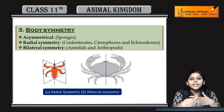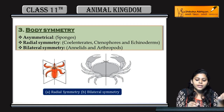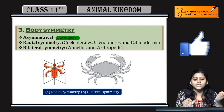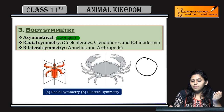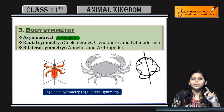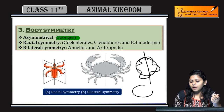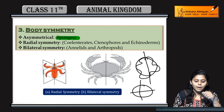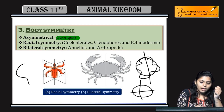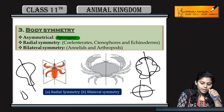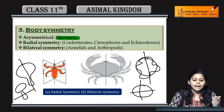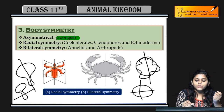Next hum dekhenge body symmetry — kaisi hai, agar hum use ek half se cut karenge to wo equal halves mein cut hoga ya nahi. Asymmetrical ho sakte hain; asymmetrical mein sponges aate hain — ek organism hai use half kisi central plane se cut karenge to wo equal halves nahi dega, to wo asymmetrical hai. Agar aap ek organism ko cut karo kisi bhi plane mein to wo sabhi taraf se equal halves dega — radial symmetry. Aur agar wo sirf ek plane mein equal halves de, doosre plane mein nahi, then wo bilateral symmetry show karega. Radial symmetry show karte hain coelenterates.